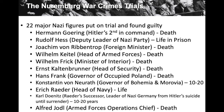The Einsatzgruppen were essentially killing squads that followed the German army east, going into towns to shoot Jews, Roma, homosexuals, and others, or sending them to concentration camps or slave labor. Hans Frank, governor of occupied Poland — where most of the death camps were located in what was called the General Government of Poland — was sentenced to death. Constantin von Neurath, governor of Bohemia and Moravia (part of Czechoslovakia), received 10 to 20 years in prison.